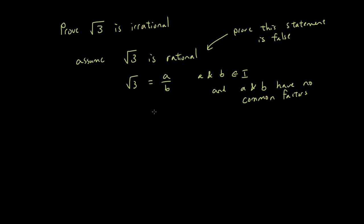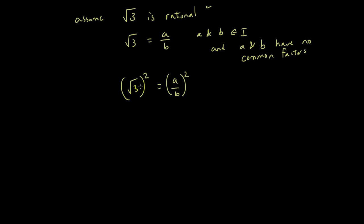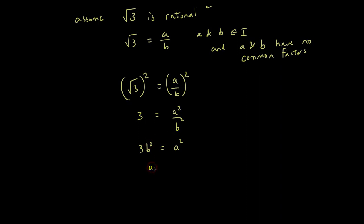Now we're going to do some algebra. We square both sides: square root of three squared equals a over b squared. Square root of three squared is just 3, giving us 3 equals a squared over b squared. Rearranging, we get a squared equals 3b squared — simply moving b squared from the denominator to the other side.